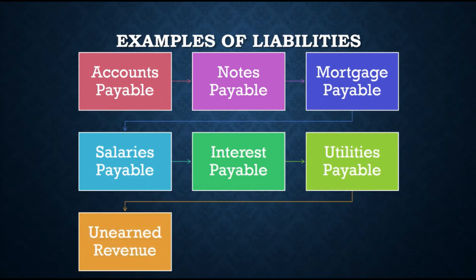Lastly is unearned revenue — revenue collected in advance, so it has not yet been earned. Like assets, liabilities are divided into two: current or non-current. Current liabilities can be paid within one year; examples are accounts payable, salaries payable, interest payable, utilities payable, and unearned revenue. Non-current liabilities are those due in more than one year, such as loans payable and mortgage payable.